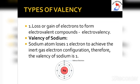Electrovalency: In the formation of an electrovalent or ionic compound, the number of electrons lost or gained by one atom of an element to achieve the nearest inert gas electronic configuration is known as its electrovalency. Elements which lose electrons form positive ions and have positive electrovalency. Elements which gain electrons form negative ions and have negative electrovalency.